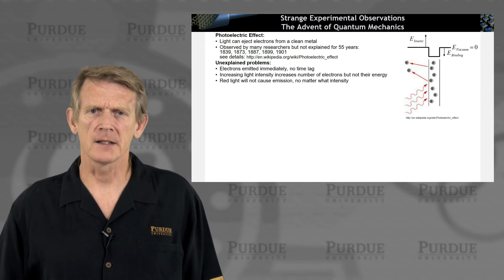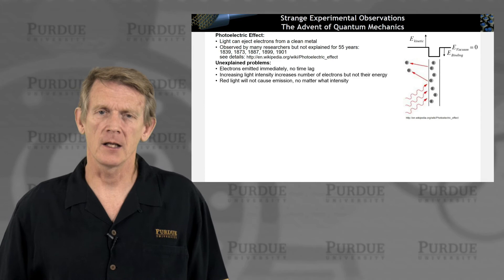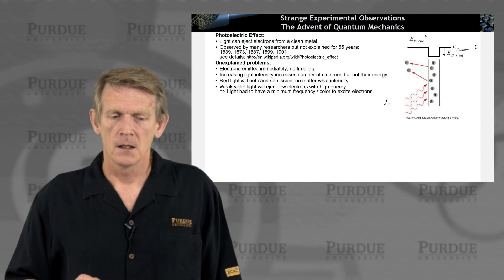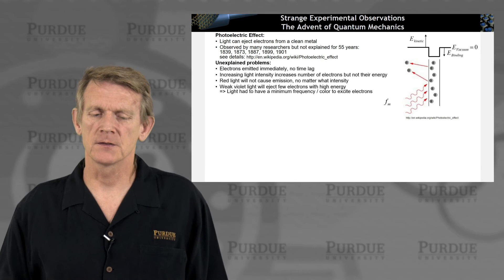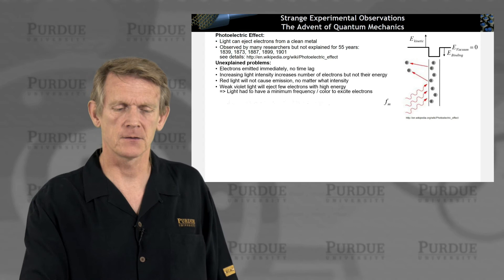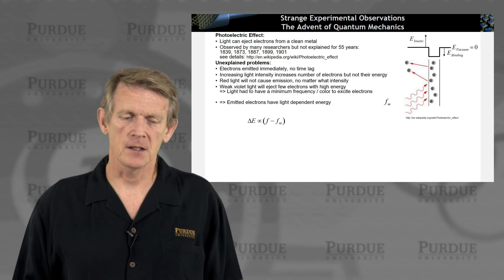Red light will not cause emission no matter what. So there seems to be something about the wavelength of the photons coming in that may or may not enable electrons to be ejected from this metal. Weak violet light will eject few electrons with high energy. So light has to have seemingly a minimum frequency or color to excite these electrons to come out. So there is a frequency dependence.